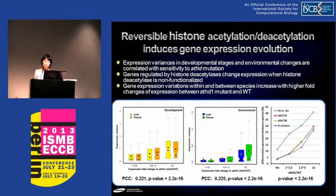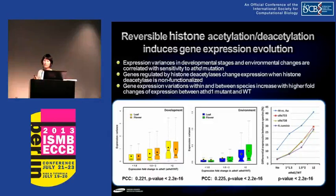To understand how dynamic chromatin remodeling works, in this case we used histone acetylation and deacetylation — specifically a histone deacetylase mutant. When histone deacetylase is not functional, the histone acetylation cannot be removed. So when we compare gene expression between a non-functional histone deacetylase mutant and wild type, we may see that genes affected by the histone deacetylase mutation show higher expression compared to wild type.